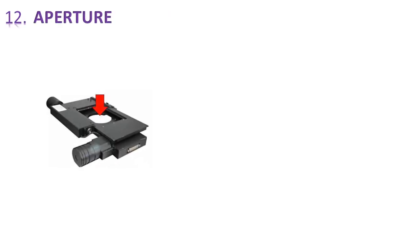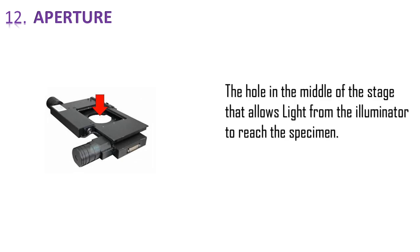And number 12 is aperture, which is the hole region in the middle or in the middle of the stage that allows light from the illuminator to reach the specimen. And generally the aperture size is constant. We can control it using the condenser by changing the condenser part of the microscope.